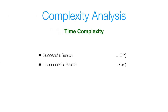Let's move on to the complexity analysis. For time complexity, performing a successful search takes linear time because in the worst case our element might be the last element in the array, so we'd have to inspect every single element. That's a linear time operation. For an unsuccessful search, we're inspecting the entire array without finding the element, so that's also linear time. For space complexity, since we're given the input array we won't include it. For both successful and unsuccessful searches, the array size does not affect the space our method uses — it still uses a constant amount of space, giving us constant space complexity.